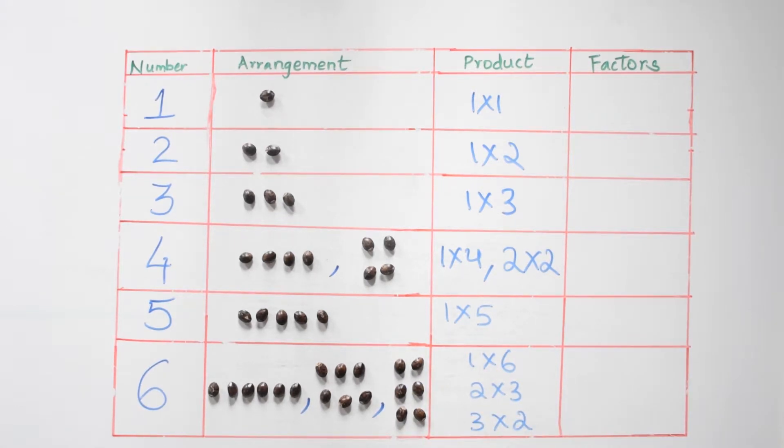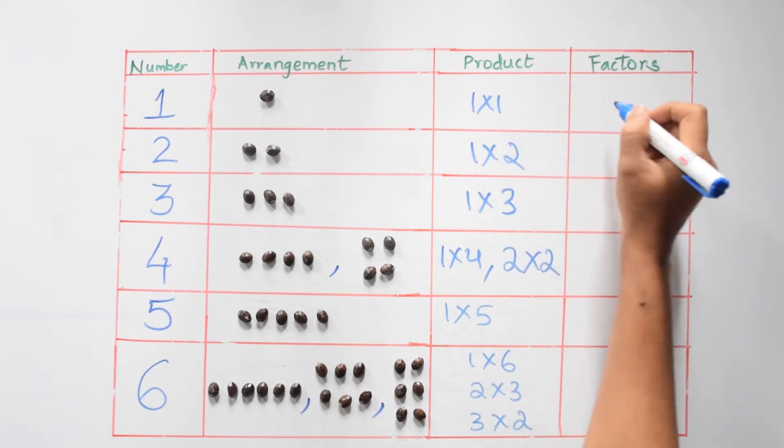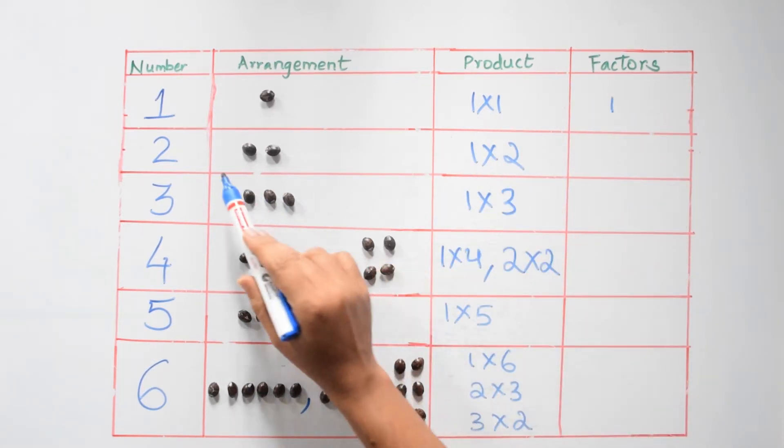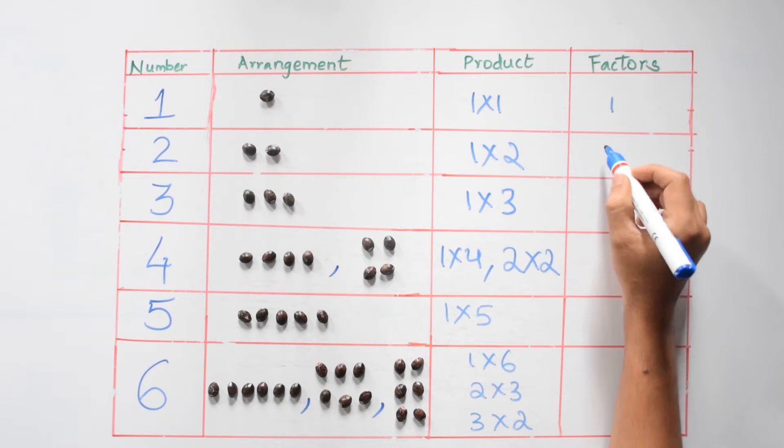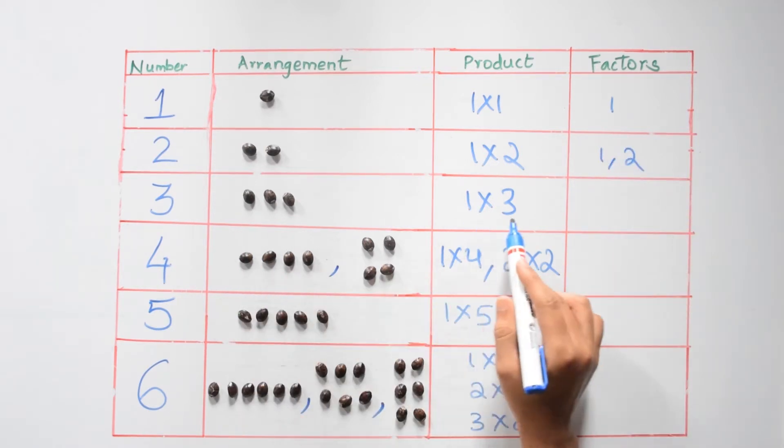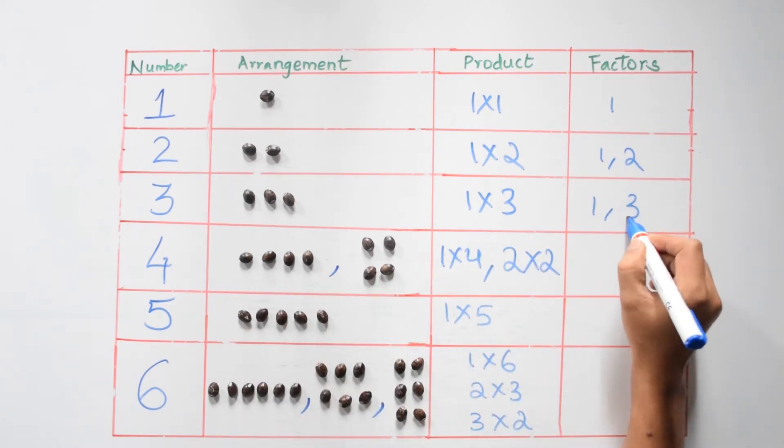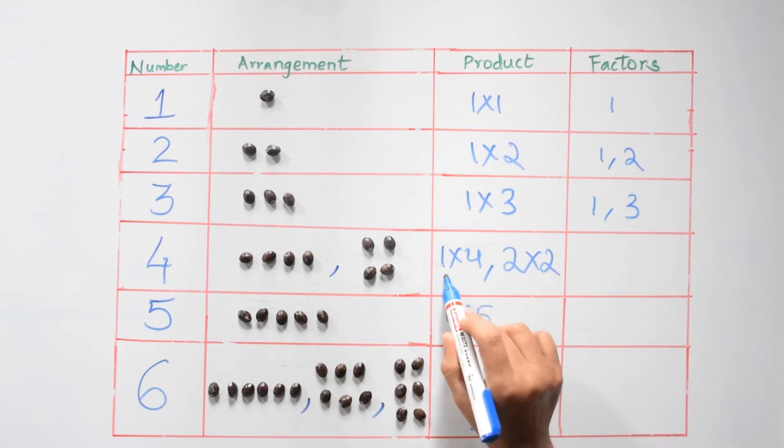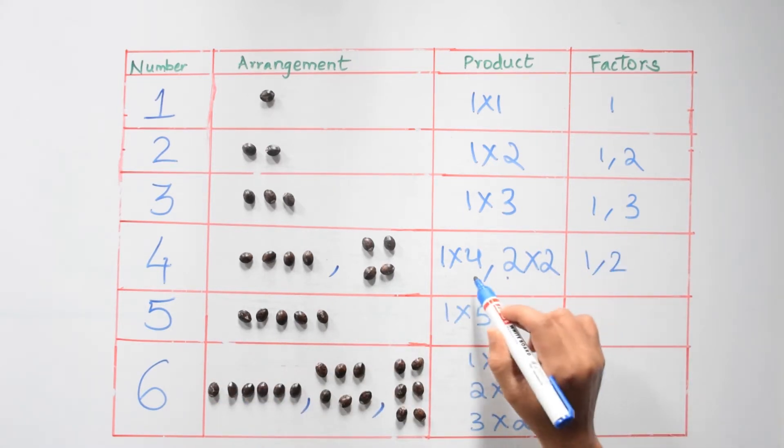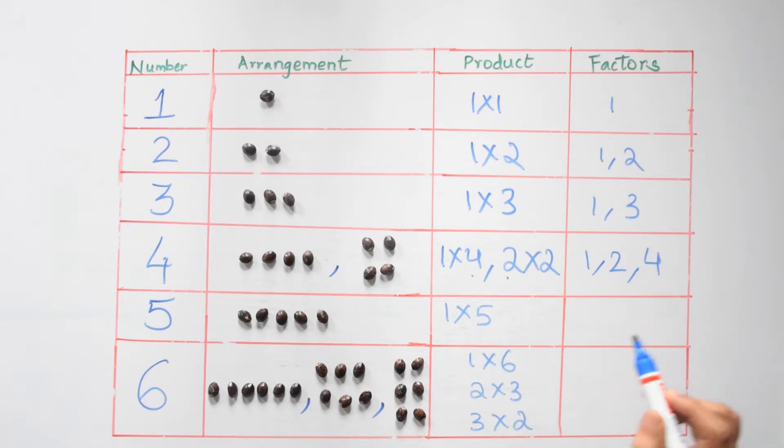From this, the factors of one is one. The factors of two are one and two. Factors of three are one and three. The factors of four are one, two, and four. Now the factors of five are one and five. The factors of six are one, two, writing in the ascending order, three and six itself.